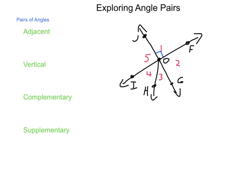Now, adjacent angles are angles that are next to one another. So in the diagram that is shown, we have many pairs of adjacent angles. 1 and 2 are adjacent, 2 and 3, 3 and 4, 4 and 5, and then 5 and 1. So any two angles that share a common border are considered to be adjacent.